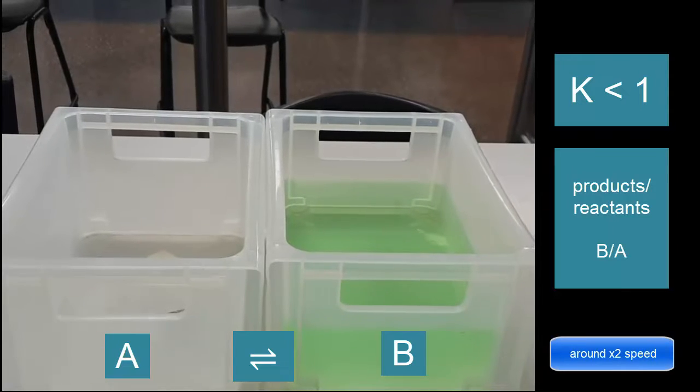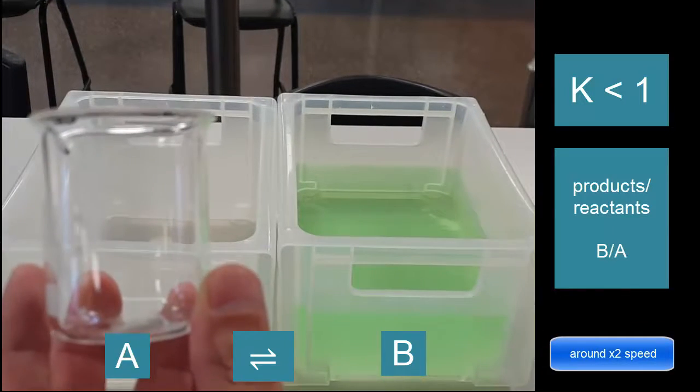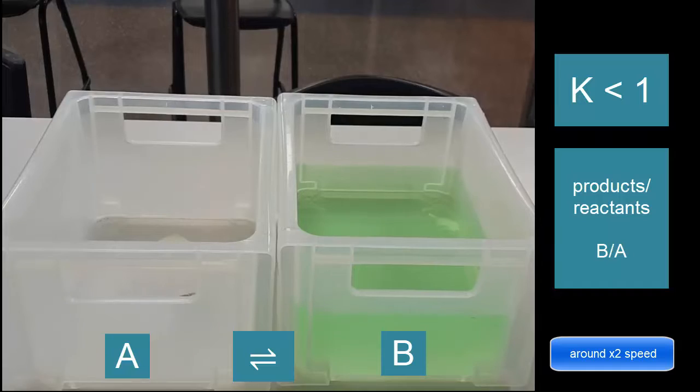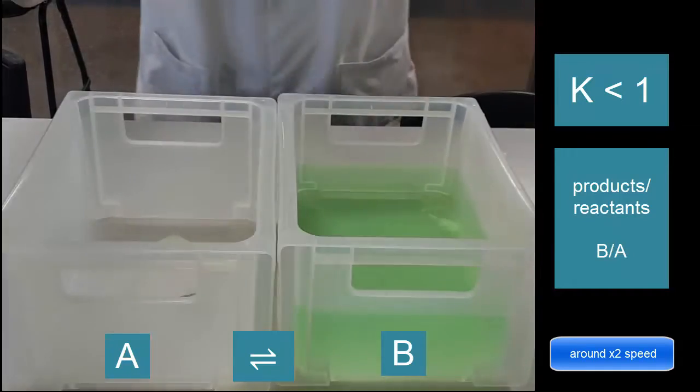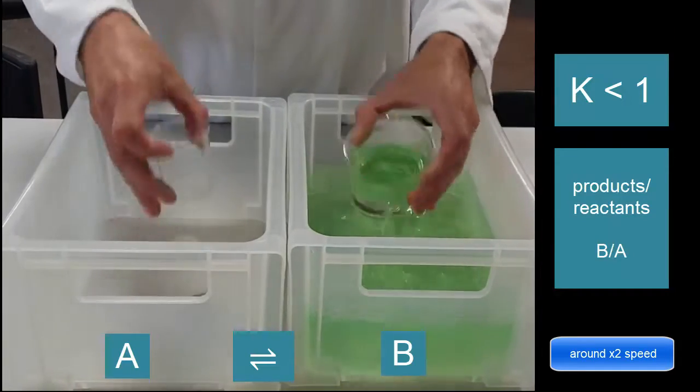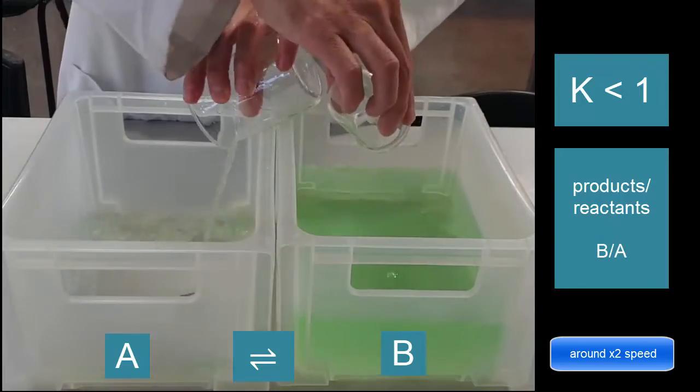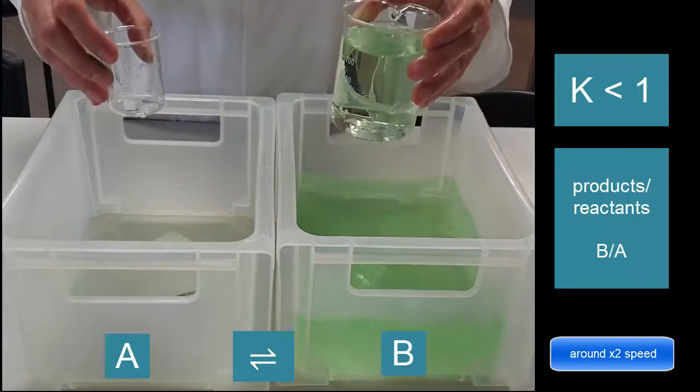This is just a quick simulation of how equilibrium works. So what you're going to have here to start with is I'm going to make K smaller than 1, then I'll do K larger than 1.